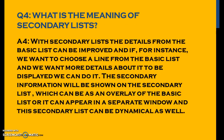What is the meaning of secondary list? The details from the basic list can be improved. If we want to choose a line from the basic list and display more details about it, the secondary information will be shown on the secondary list, which can overlay the basic list or appear in a separate window. The secondary list can also be dynamic — you can have multiple secondary lists based on the selection in the basic list.